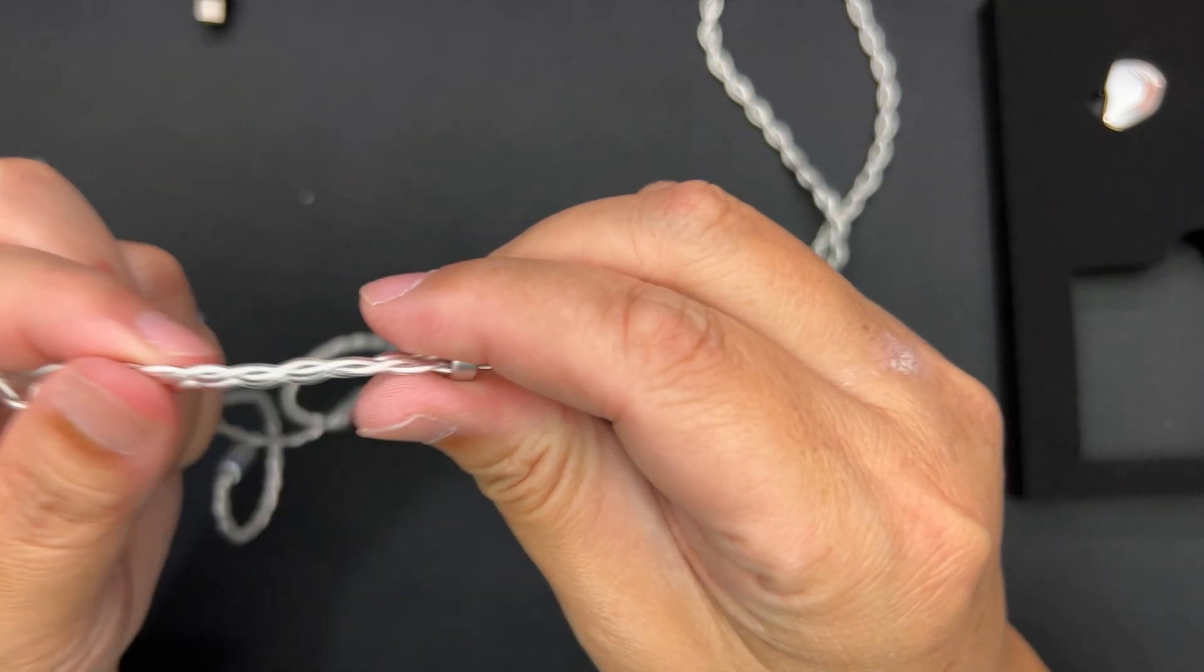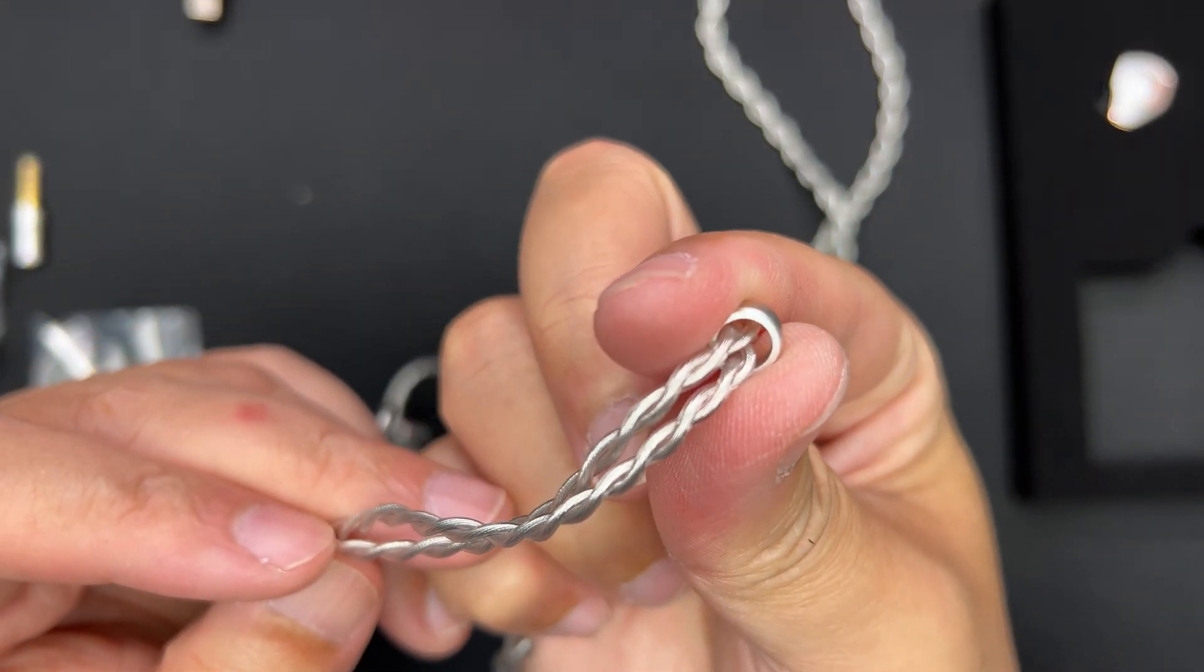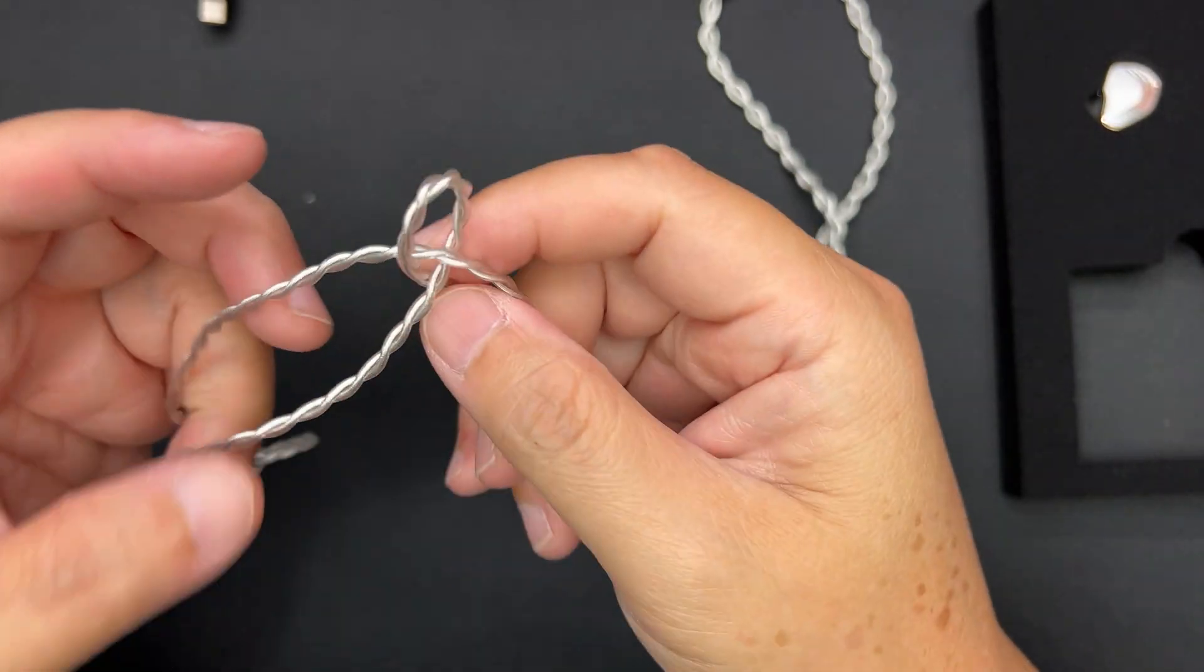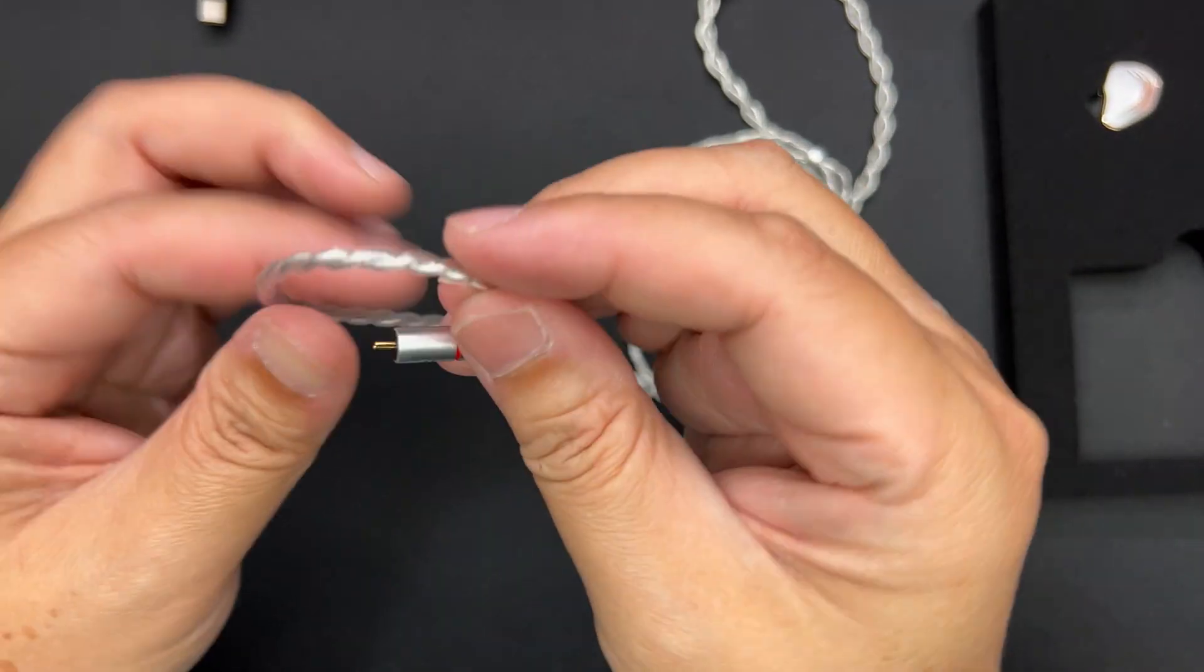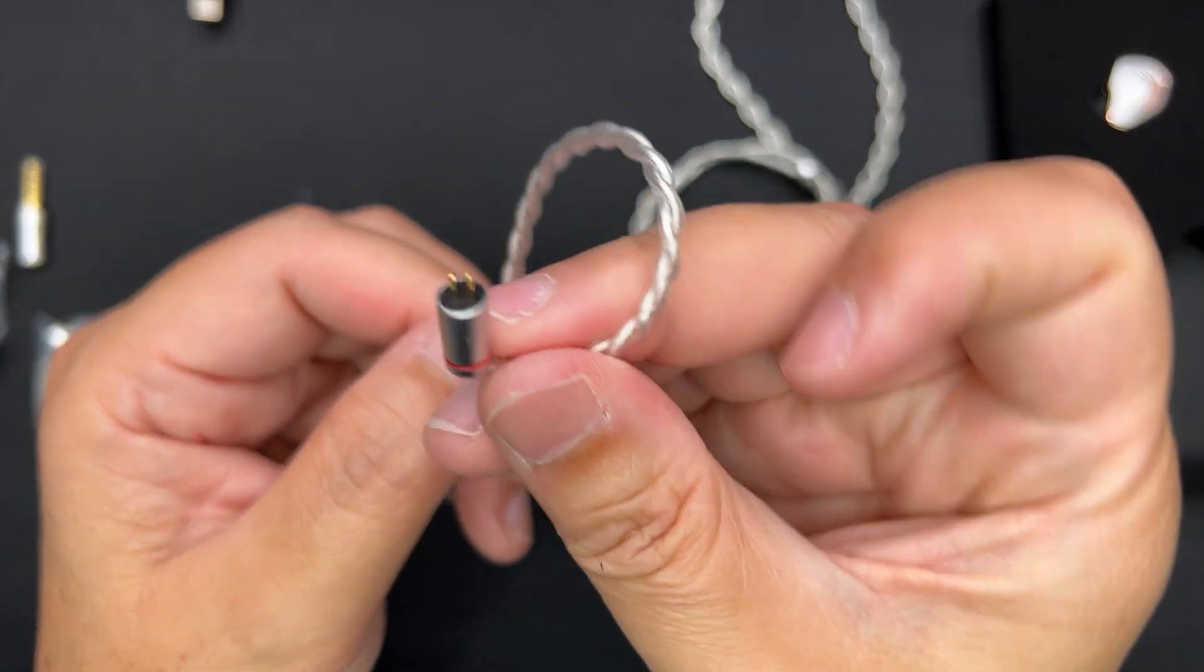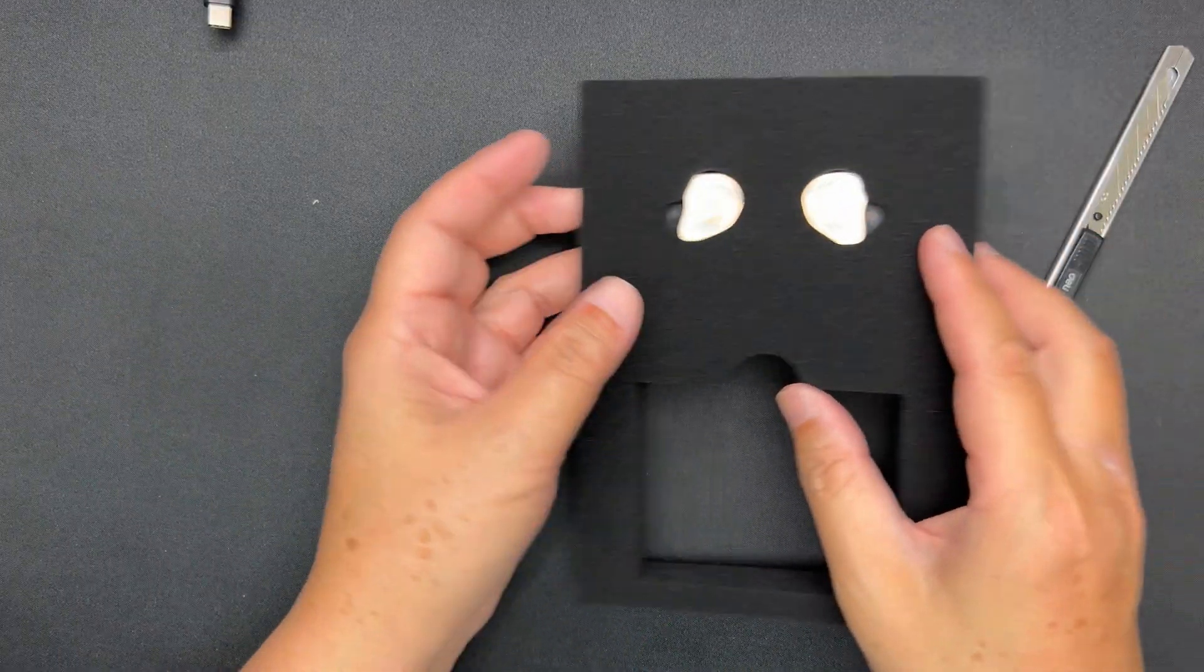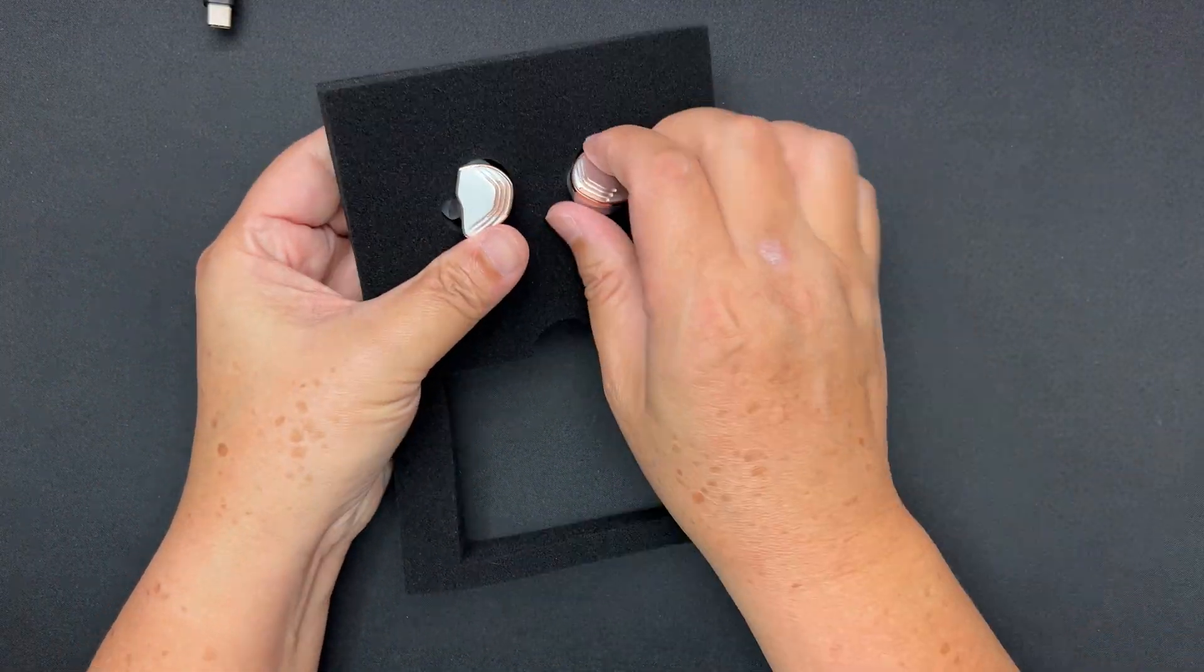The Y splitter has a metal sleeve here with the plastic sticking out. The chin slider is a little bit loose - you can see the gap is pretty big. Then you have your ear hooks which are very soft. This is a two pin connector. That's for the cable.